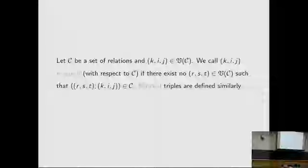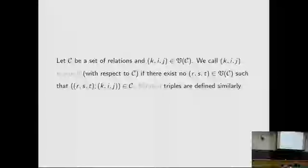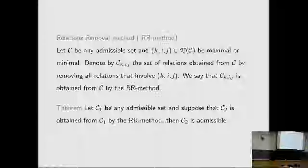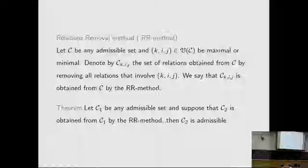Let C be a set of relations. The key idea involves V(C): we call a vertex K_{ij} in V(C) maximal if there is no R_{st} in V(C) such that the corresponding element is in C going forward. We can define the minimal vertex similarly. Given any admissible set C and a key vertex that is maximal or minimal, we define the set C_{key} as the set of relations obtained from C by removing all relations that involve the key vertex. We say this one is obtained from C by the RR method.